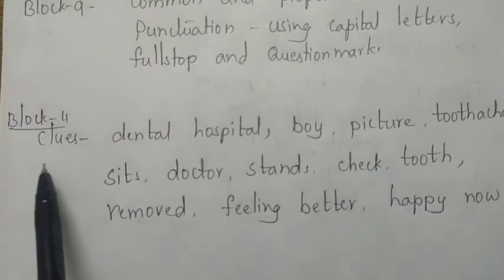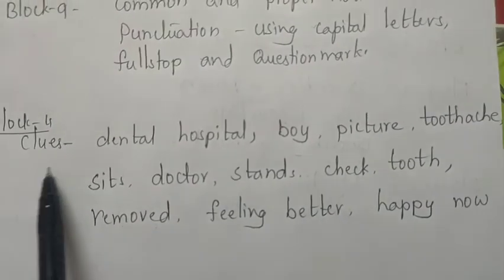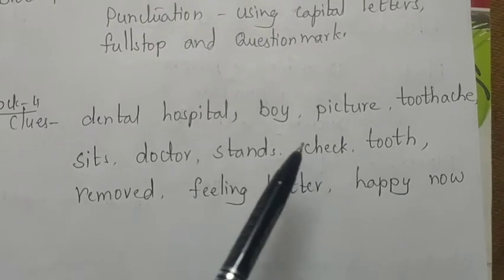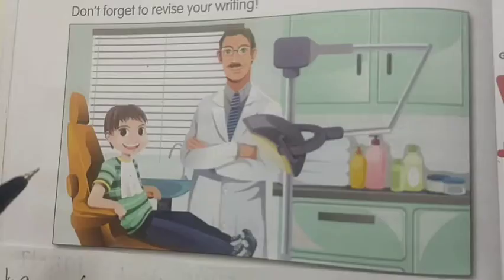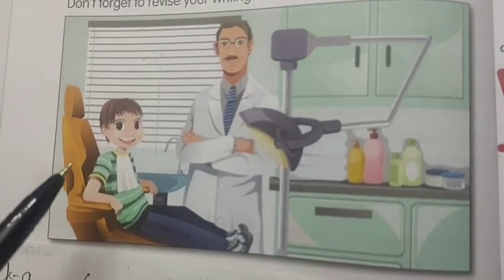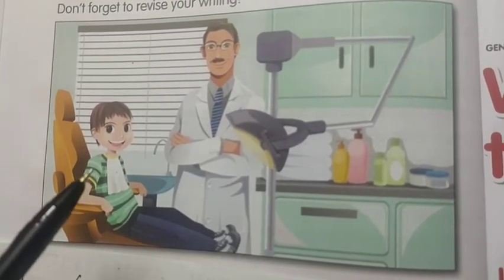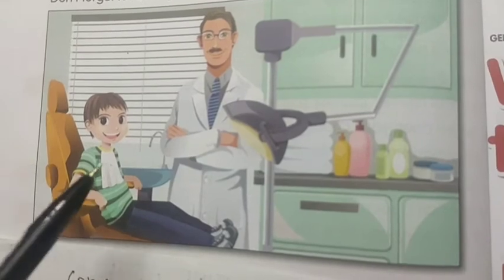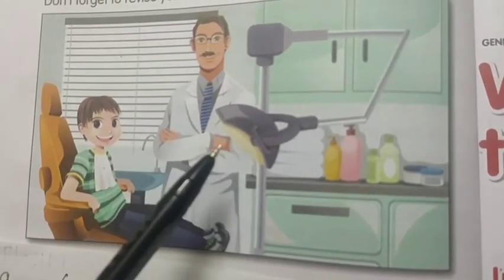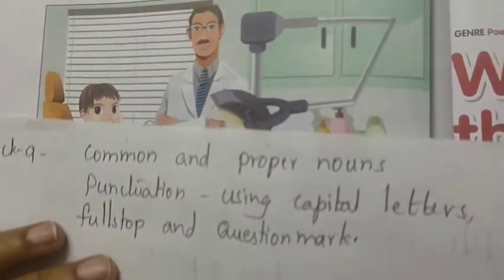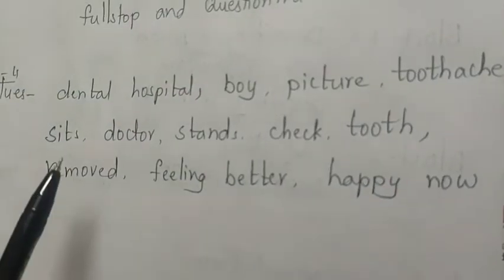Now I told you in block 4, clues we will give you and you have to write the story. One second children I will show you the picture. See children for example I am showing you. The same picture it won't come in the exam. See this is the picture.